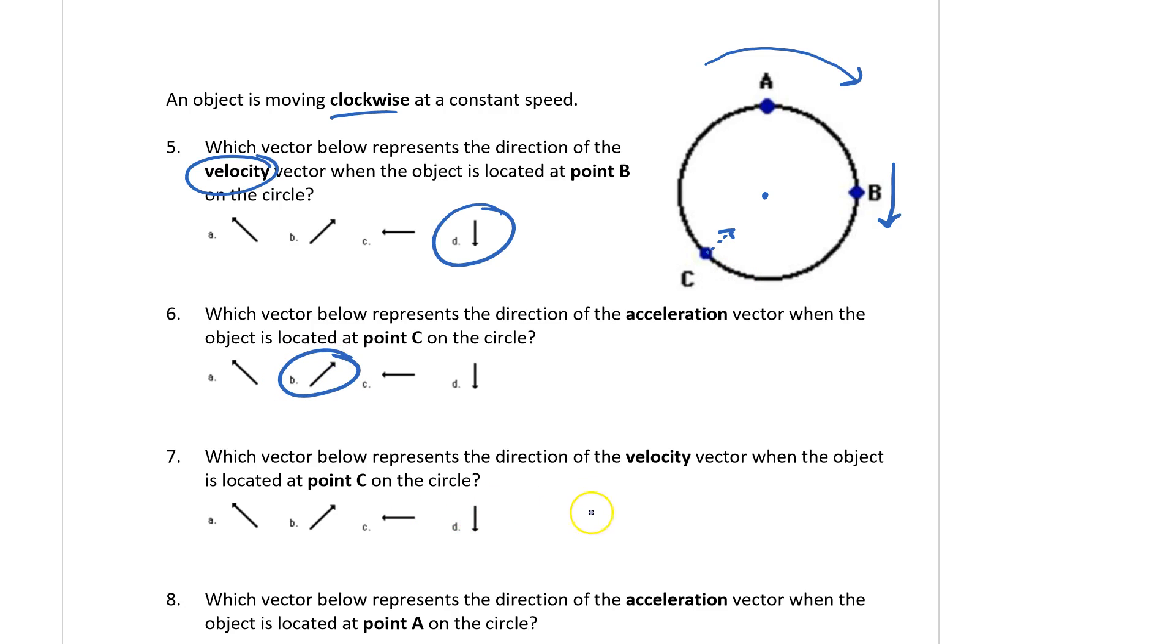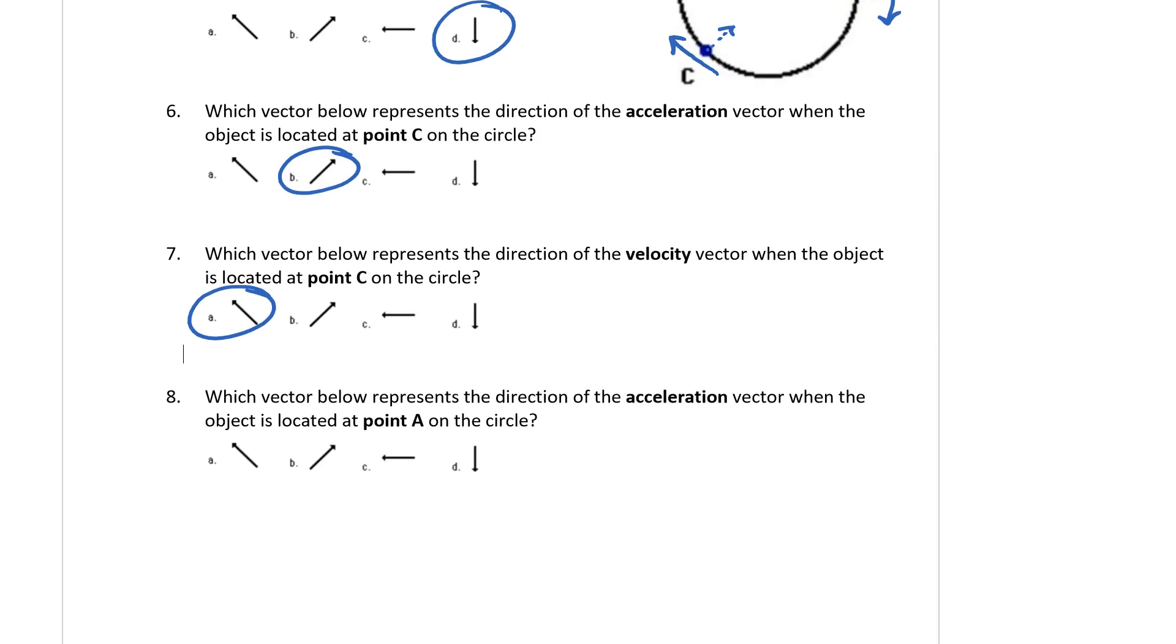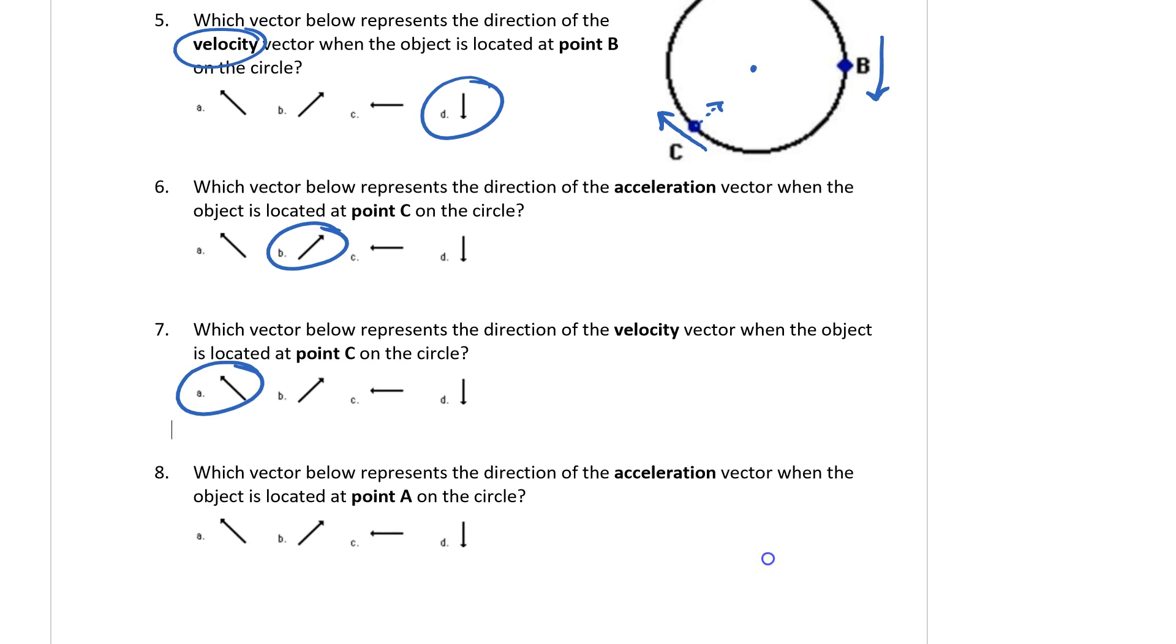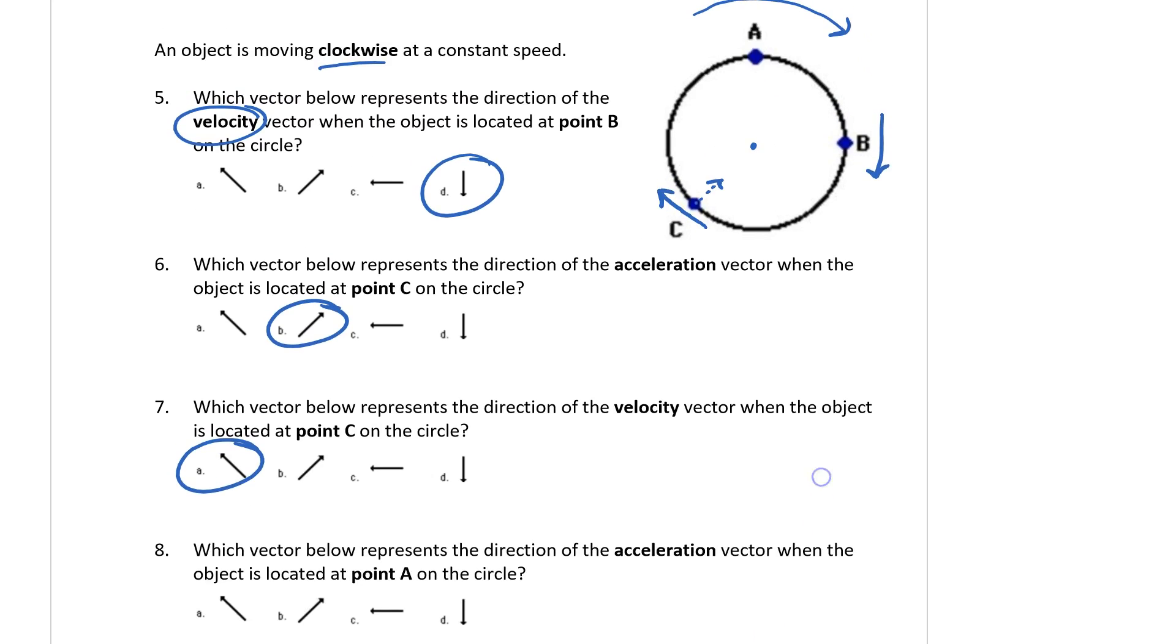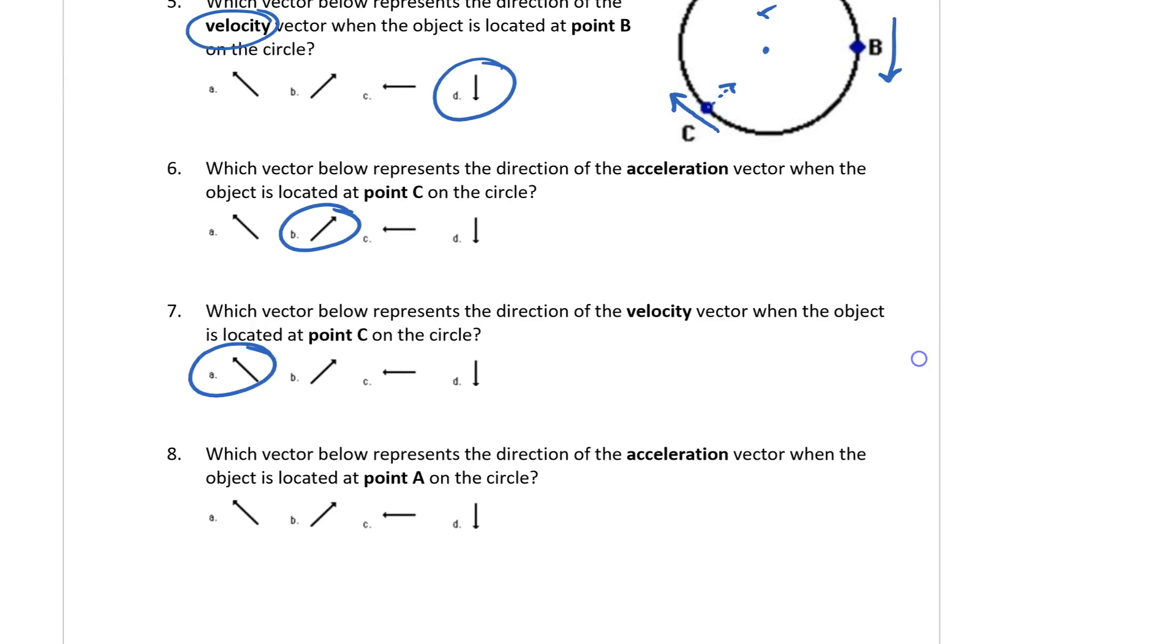Which vector represents the direction of the acceleration vector when it's located at point A? This would be towards the center, so it would be D.